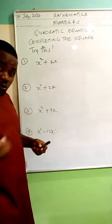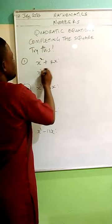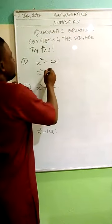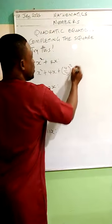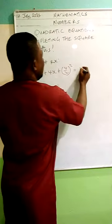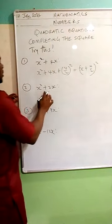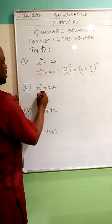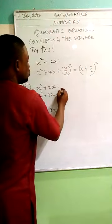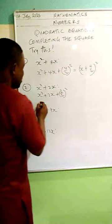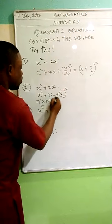Let me do these practice examples. For x squared plus 4x: I'm adding 4 over 2 all squared, and I'm going to get x plus 4 over 2, all squared. For x squared plus 2x: I'm adding 2 over 2 all squared, and it becomes x plus 2 over 2, all squared. Is that right?